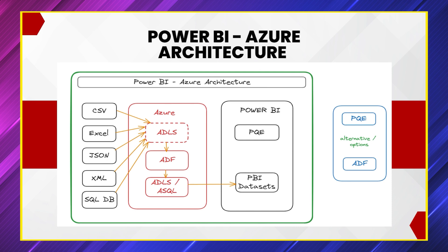In Azure Data Factory there are two ways to do transformations. Looking at the middle layer of the architectural diagram, you can bring all the data into ADLS — Azure Data Lake Storage. From Data Lake Storage, you process it in ADF — Azure Data Factory — doing all the transformations and data cleaning, then push it back into a cloud-based server. From there, you can directly point it to your Power BI datasets and start building reports.